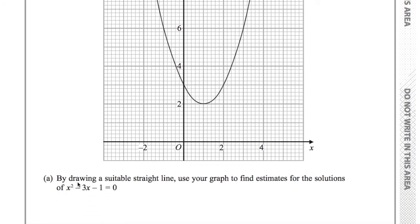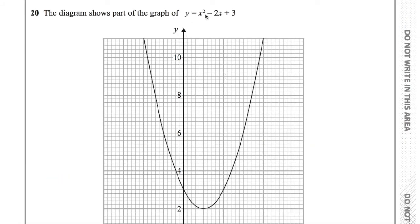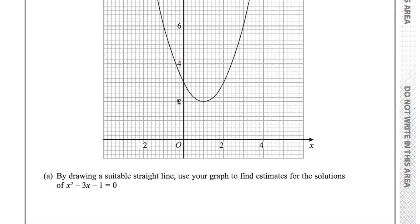Part a says, by drawing a suitable straight line, use your graph to find estimates for the solutions of x squared minus 3x minus 1 equals 0. So they've given us the graph of x squared minus 2x plus 3, and they want us to find the solutions of x squared minus 3x minus 1.